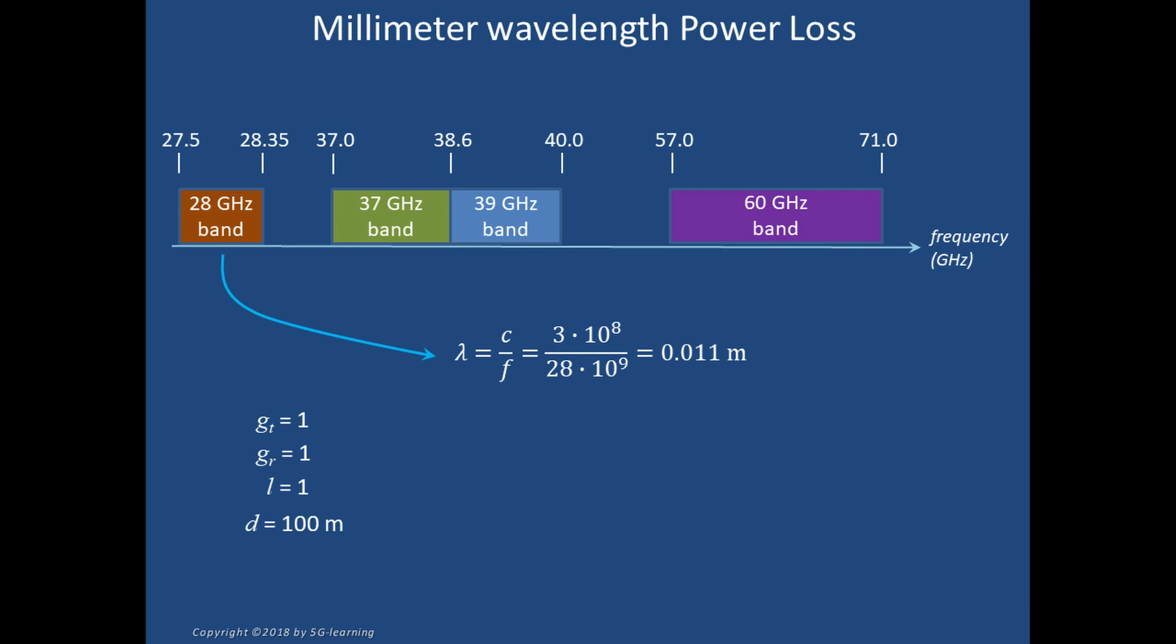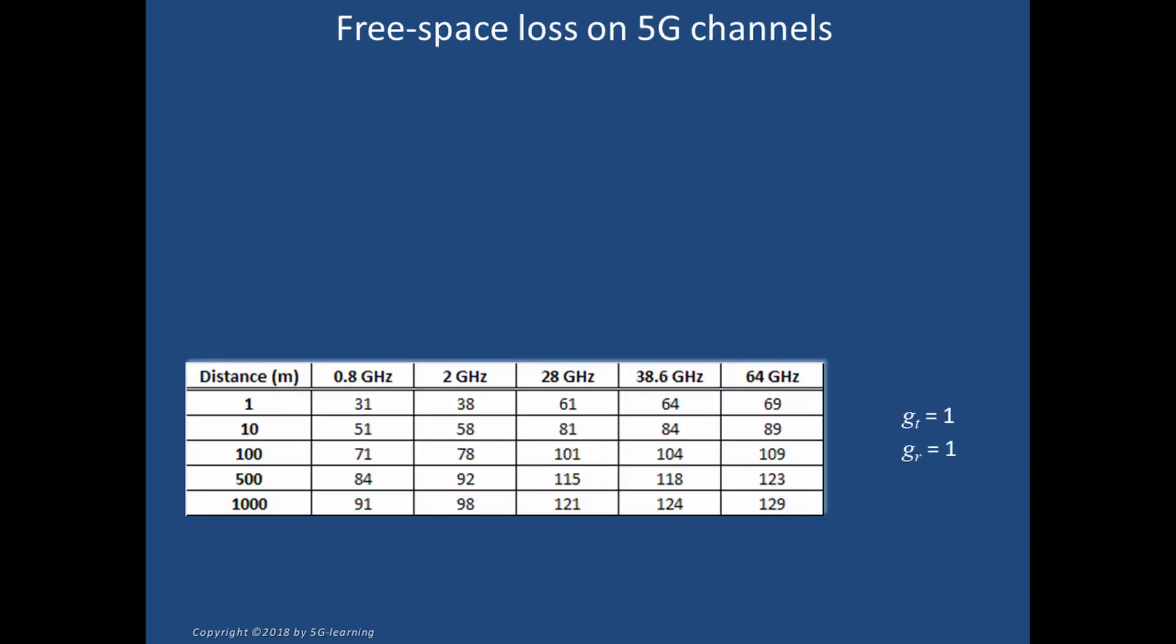What will be the power loss if both antennas have unity gain and the distance between transmitter and receiver is 100 meters? Take for example waves transmitted at 28 gigahertz; the corresponding wavelength is 11 millimeters. Applying Friis equation, we find that it is 101 dB.